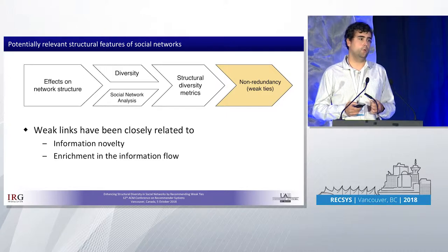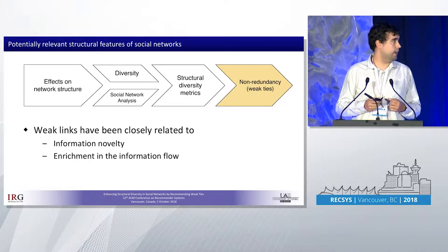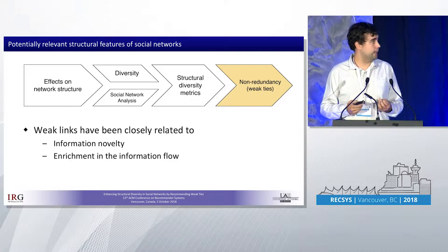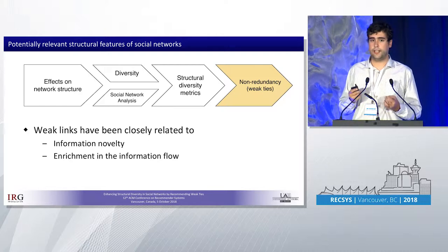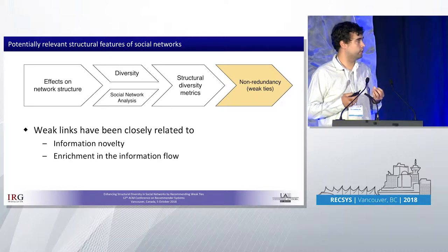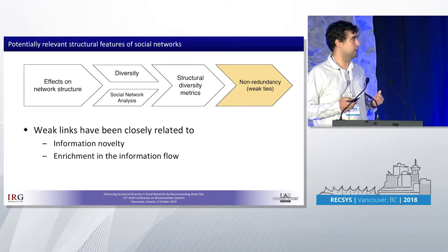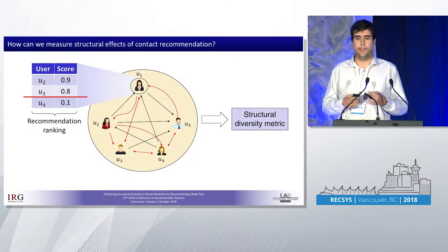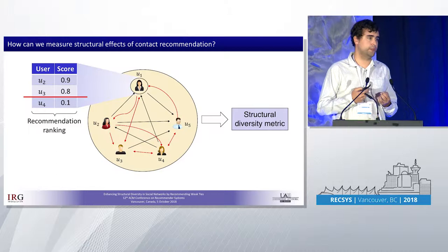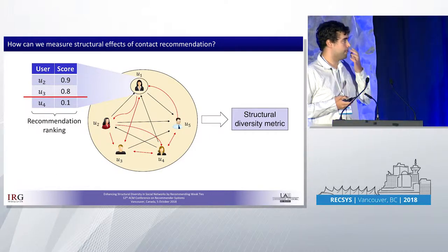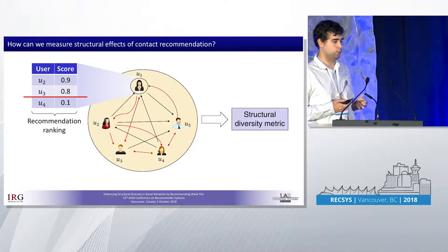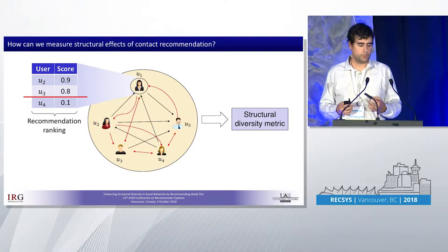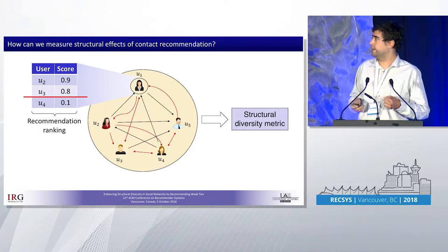Specifically, we targeted the diversity concept in social network analysis — the so-called structural diversity. Structural diversity has been related to the concept of weak ties, and to how non-redundant weak links are in the network. Since weak ties have been traditionally related to information novelty and an enrichment in the information flow, it seems like a promising starting point to consider.